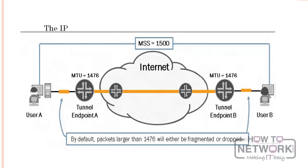Each tunnel endpoint must have a valid route to the remote tunnel endpoint. For proper tunnel operation, this route must resolve to the physical next hop in the end-to-end communication path and should never use a recursive route, which is a route for which the best path to the remote tunnel endpoint is through the tunnel itself. If a tunnel endpoint uses the tunnel as the best path to the remote endpoint, the tunnel interface bounces and becomes unusable. Juniper recommends configuring static routes on the tunnel endpoints for the destination tunnel endpoint to avoid problems like these.